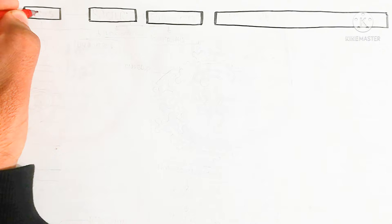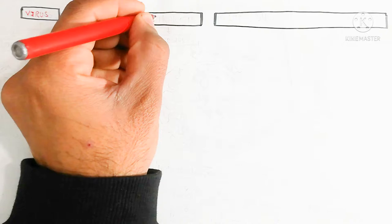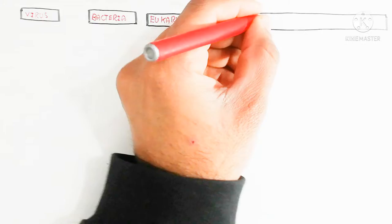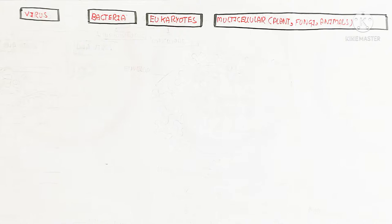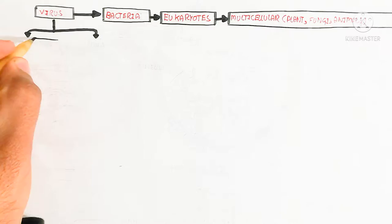Hello, in this video we will discuss about the different types of cells, for example virus, bacteria, and eukaryotes, which can be unicellular to multicellular — plants, fungi, and animals. The virus is part of the evolutionary process but is not living in the outer environment; it requires a host. I am including all cell types in this video.